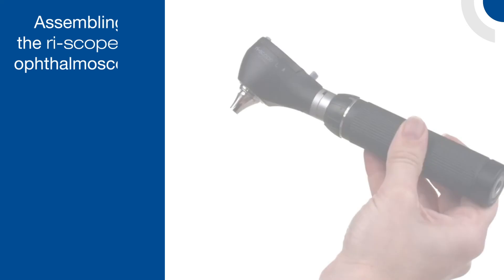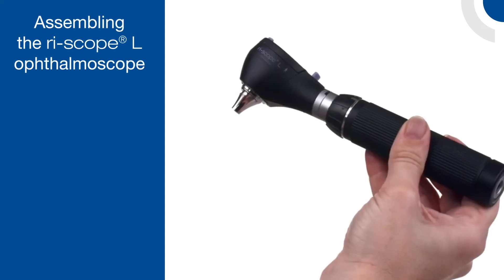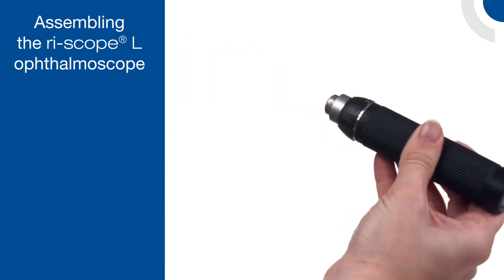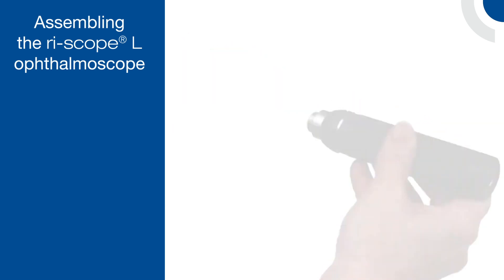To remove the otoscope head, turn the head in a counter-clockwise direction. You will feel the head lift slightly, separating from the handle once disengaged.